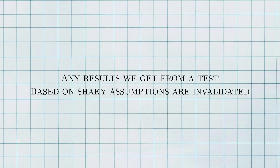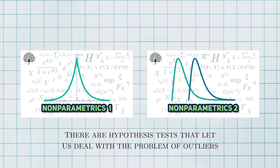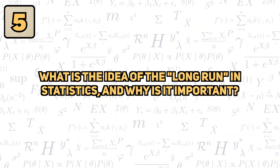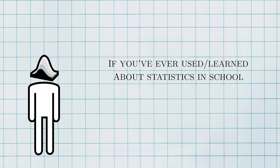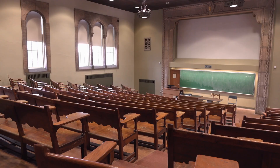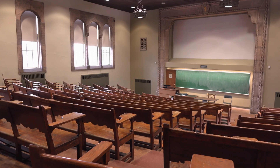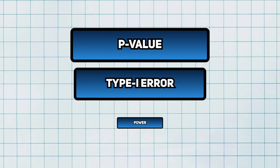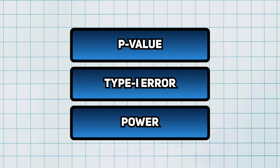That being said, there are hypothesis tests that account for the presence of outliers, so if you suspect that your particular problem will naturally have them, these should be considered. What is the idea of the long run in statistics, and why is it important? If you ever use statistics in your work, then I'd be pretty confident in predicting that you'll be using a paradigm called frequentist statistics, or frequentism. Frequentism is the main way that people are taught to use statistics in schools. Everything I've talked about in this video so far has frequentist roots.